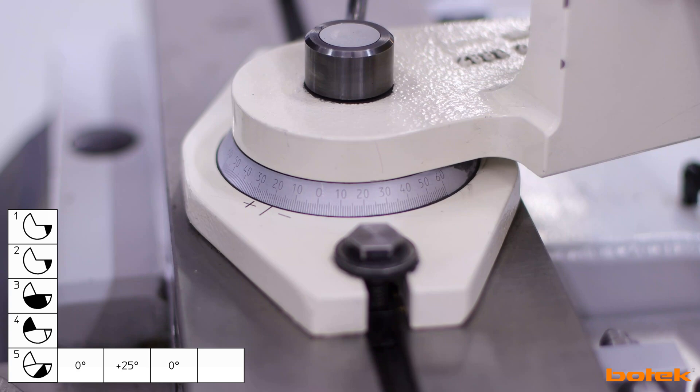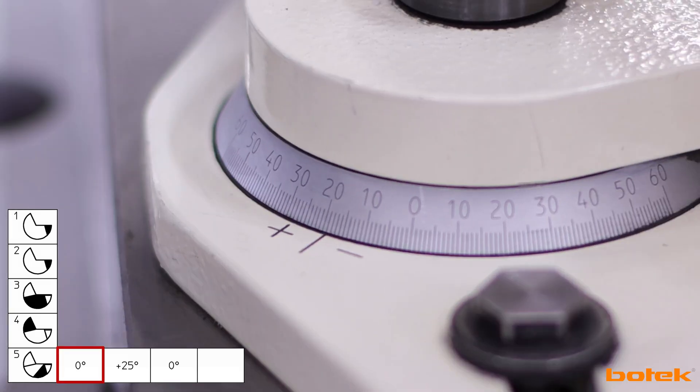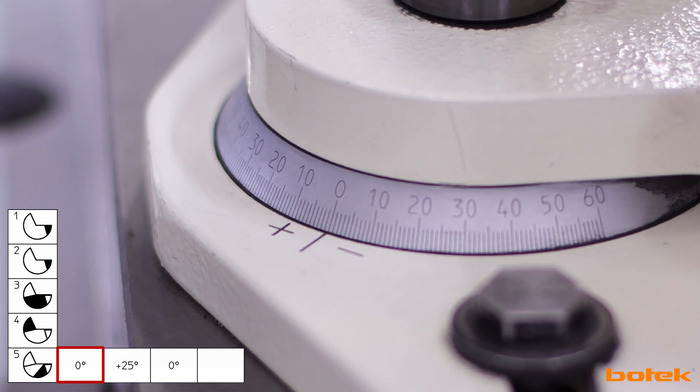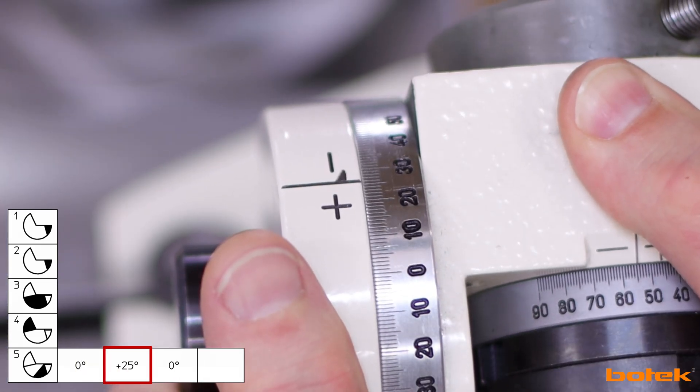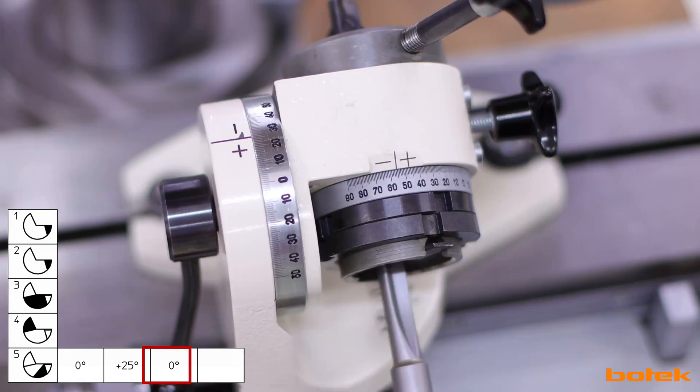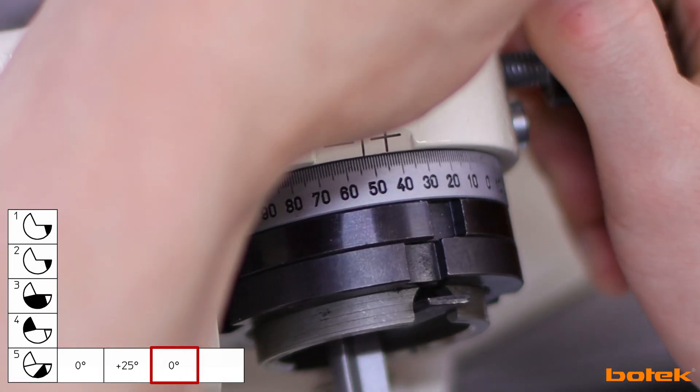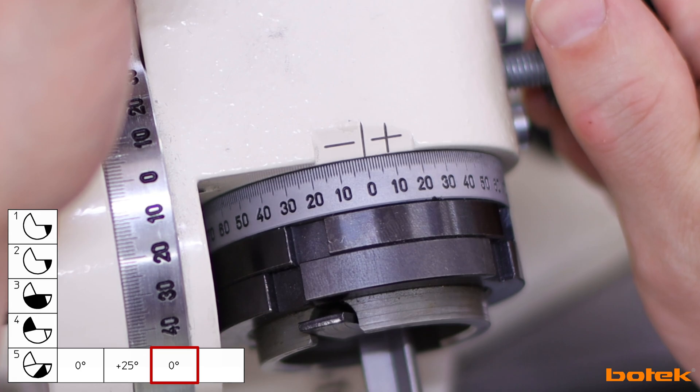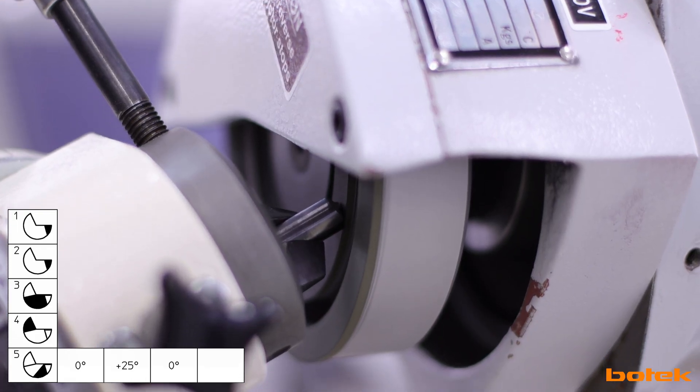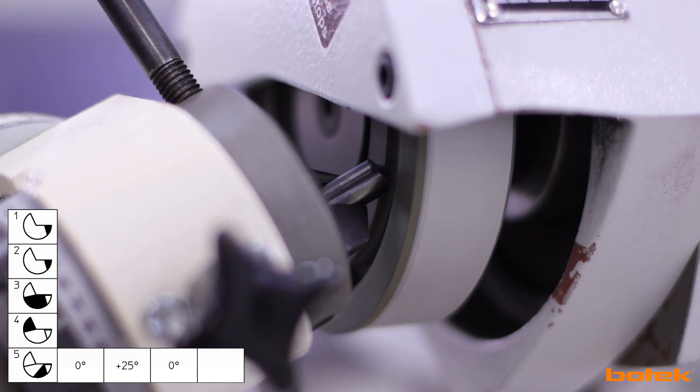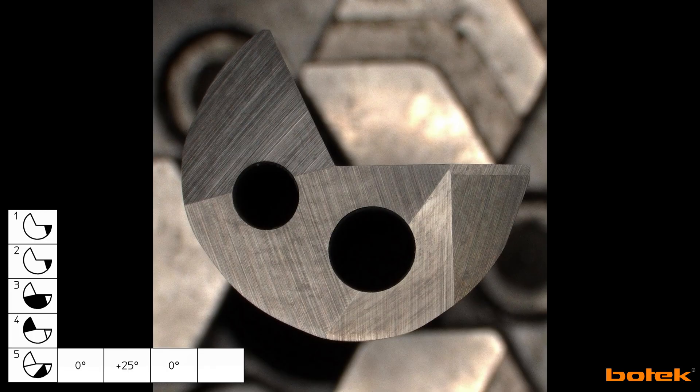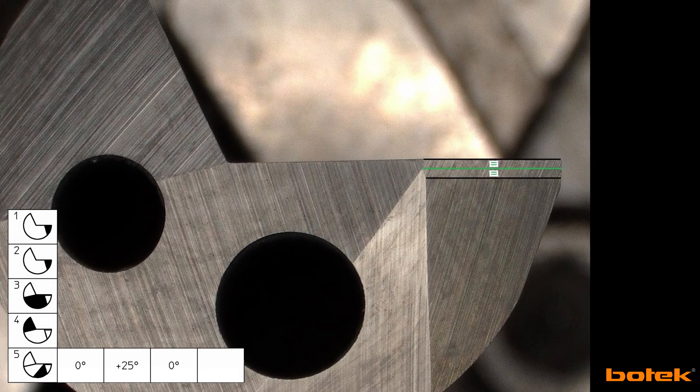To enable you to attach the clearance angle to the tool tip, set the swivel angle to 0 degrees, the tilt angle to plus 25 degrees, and set the torsion angle to 0 degrees. Gently grind the surface. The aim here is that the clearance angle surface ends in the middle of the cutting chamfer.